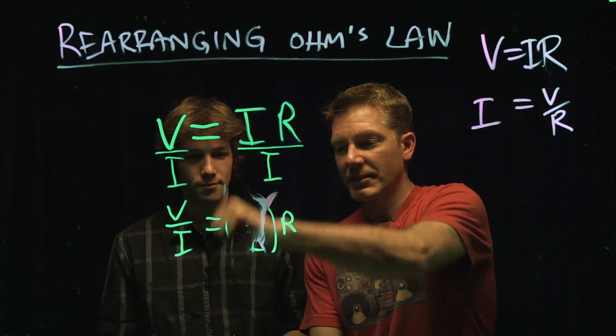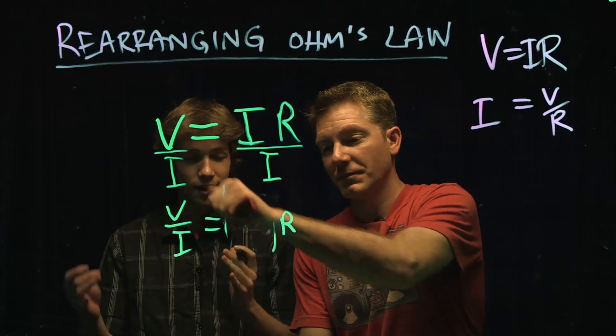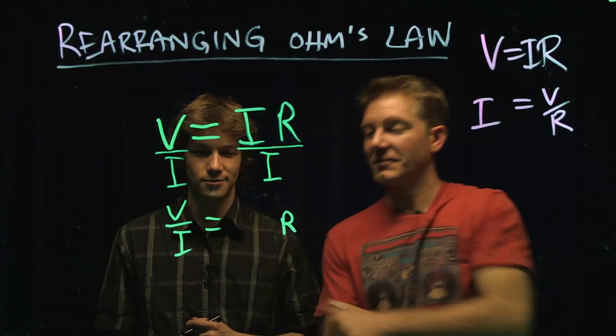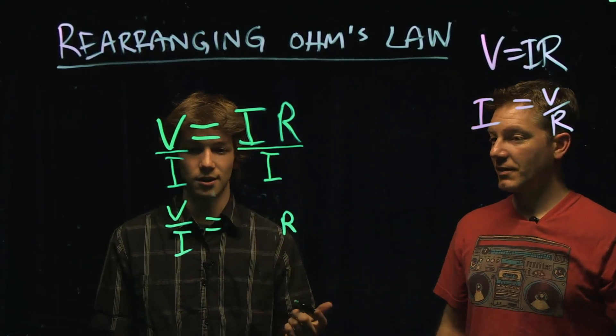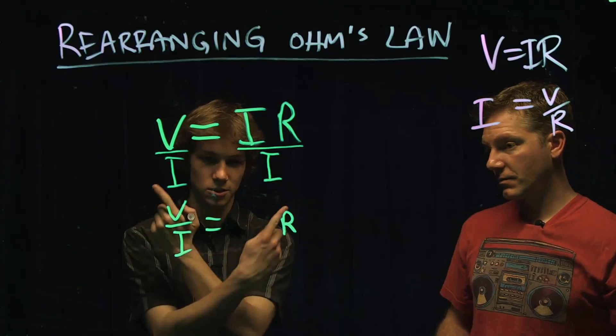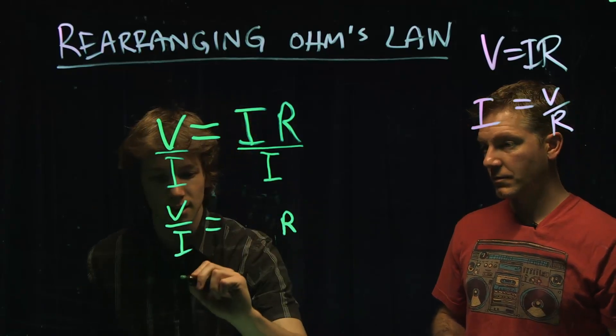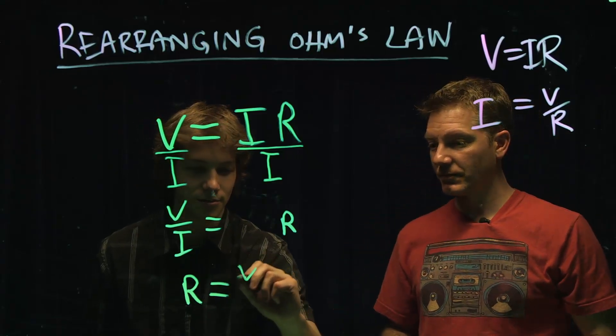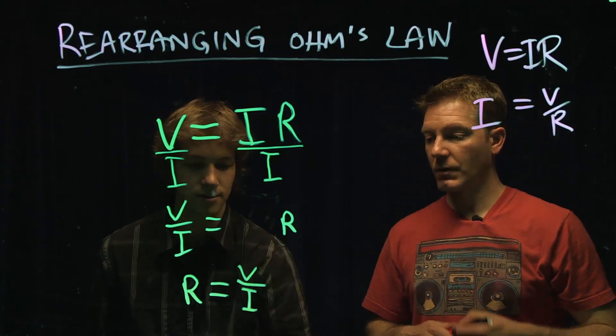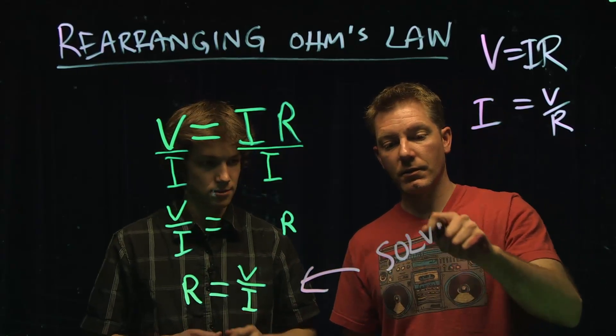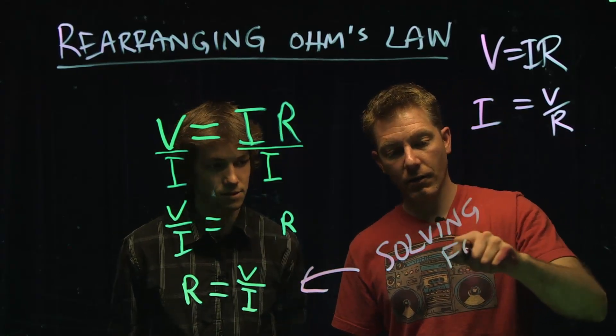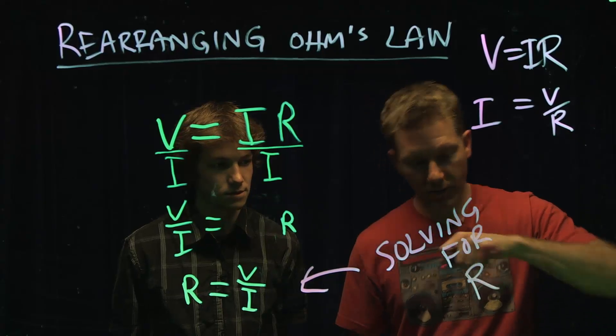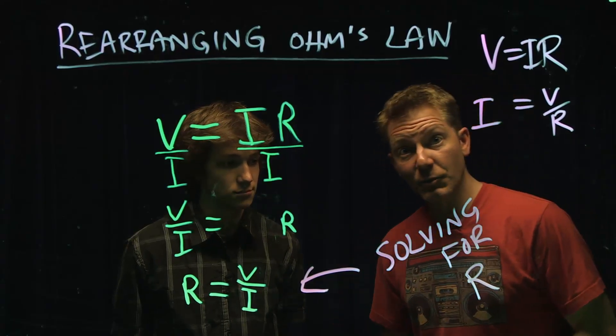Say buh-bye. All right. And then all that's left to do is to switch them to the left side. R can go on the left side, V over I on the right side. And that's called solving for R. It's that simple.